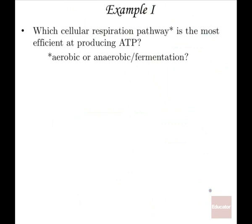First example: which cellular respiration pathway is the most efficient at producing ATP — aerobic, anaerobic, or fermentation? As we discussed throughout today's lecture, the answer is aerobic. We can certainly produce ATP by the other pathways, but we just don't get as much of it.